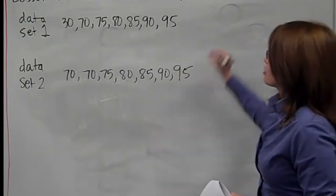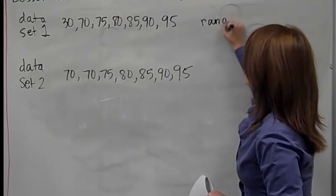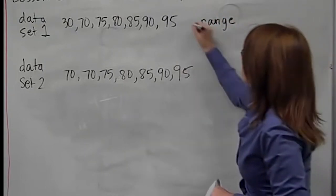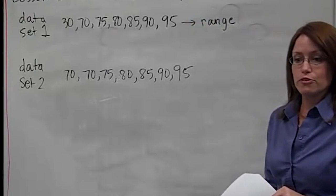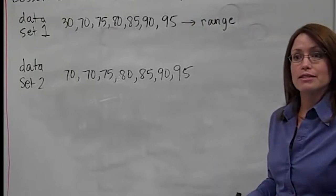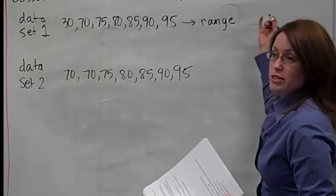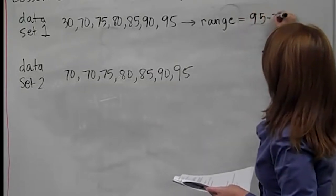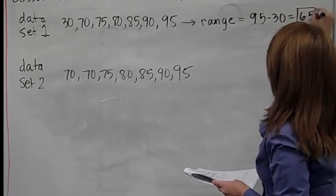The first thing I want you to notice is that the range of data set number one is an easy calculation — it should be on your formula sheet. Range is the highest value minus the lowest value. So if these were test grades, we'd be looking at 95 minus 30, giving an answer of 65.